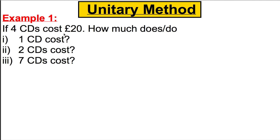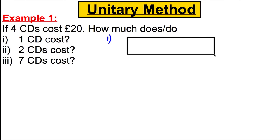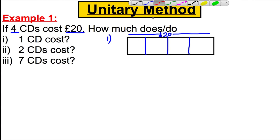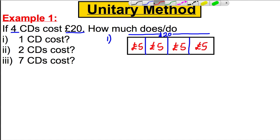Example one — write this down. Four CDs cost 20 pounds. How much does one CD cost, two CDs cost, and seven CDs cost? For part one, we're always going to find out what one CD costs. Draw the usual picture — the whole of this is 20 pounds — and we're going to split it into four. So what number must go in each box? It must be five.